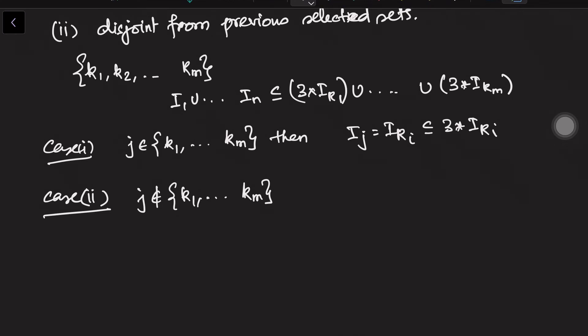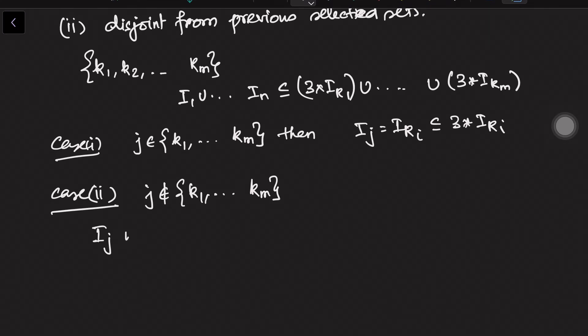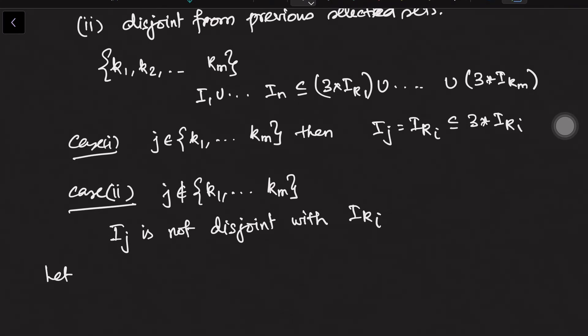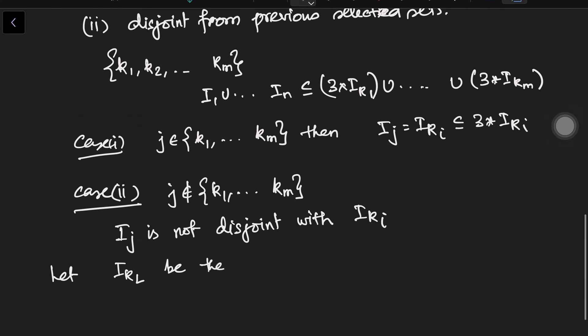So hence it is clear that i_j is not disjoint with i_ki. That means at least for some k_i, i_ki and i_j will intersect. Choose the one which is the smallest. So let i_kl be the first one, or what is called k_l is the smallest.